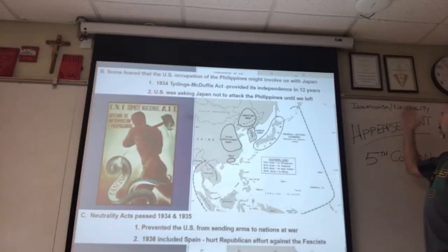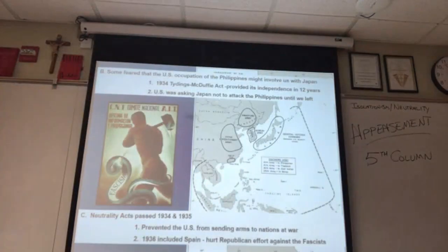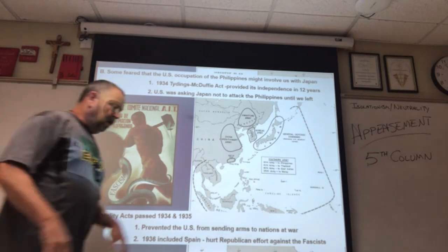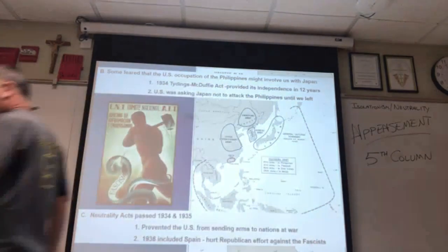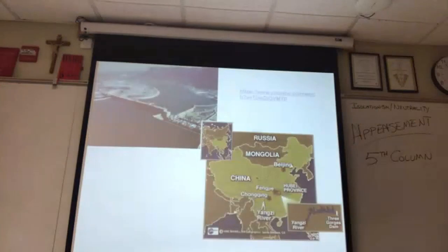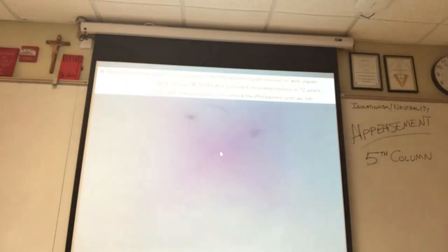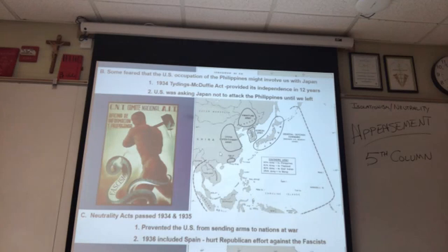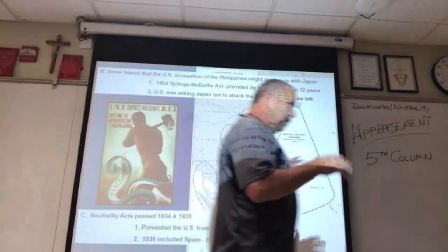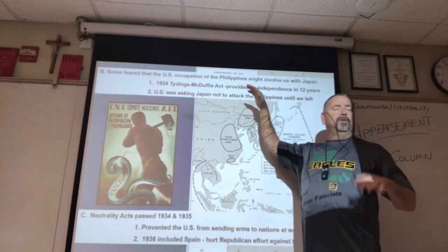We'll include isolationism, neutrality, and appeasement in the fifth column as well. We were talking about isolationism — where the American people are — and we'll go a little deeper into that today. One of the fears the U.S. government had as Japan continues to expand southward is that the Philippines are right here.